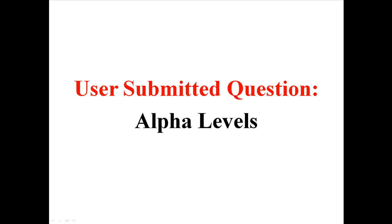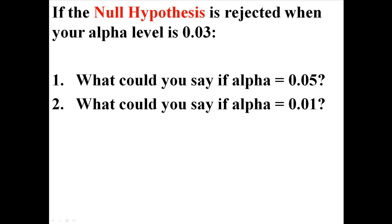Recently, someone submitted a question to me about alpha levels, and that question was, if the null hypothesis is rejected when your alpha level is 0.03, first of all, what could you say if alpha was 0.05, and second of all, what could you say if alpha was 0.01?